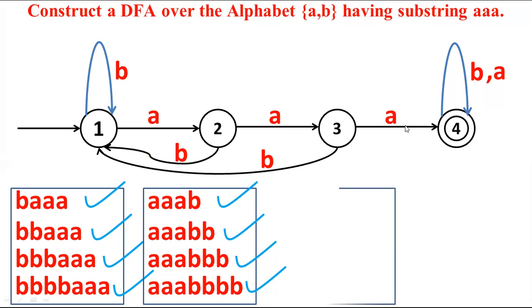Now let us consider the example 'ab aaa' — can it be accepted? Yes, 'ab aaa' is accepted by the DFA.